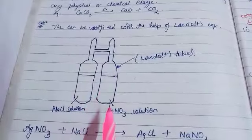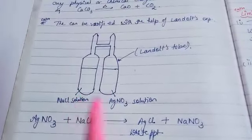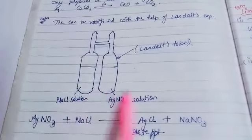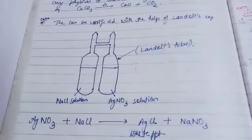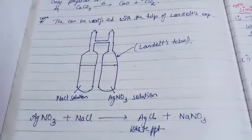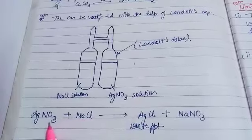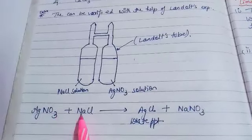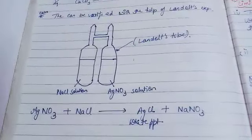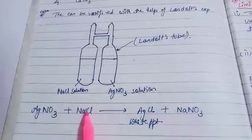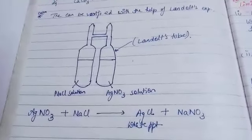In Landolt's experiment, we have two tubes connected together. One side has NaCl solution, the other has AgNO3 solution. Weigh the whole apparatus before the reaction. When you shake and mix them, a double displacement reaction occurs: NaCl + AgNO3 → NaNO3 + AgCl (white precipitate is formed). The total mass of products equals total mass of reactants, confirming the Law of Conservation of Mass.